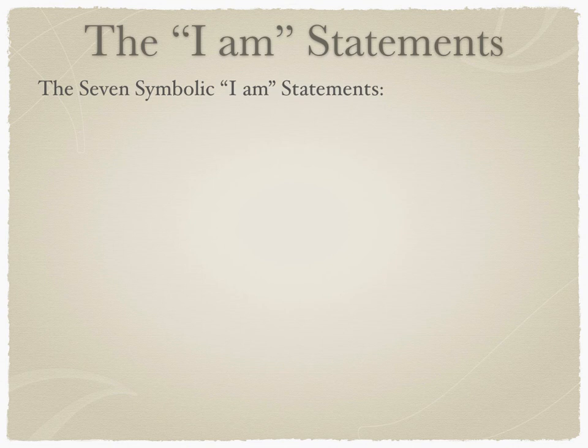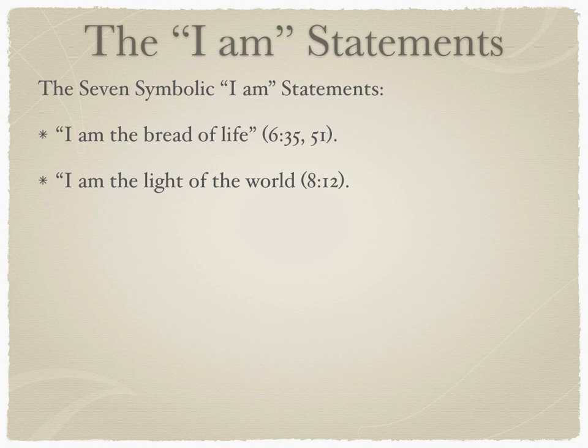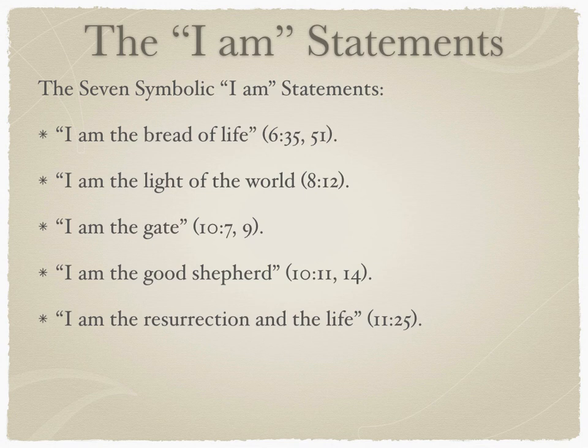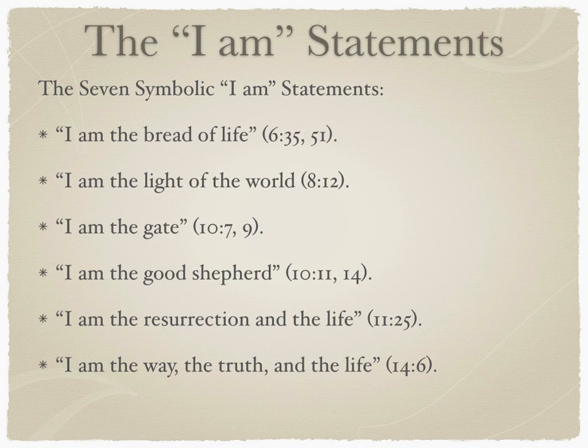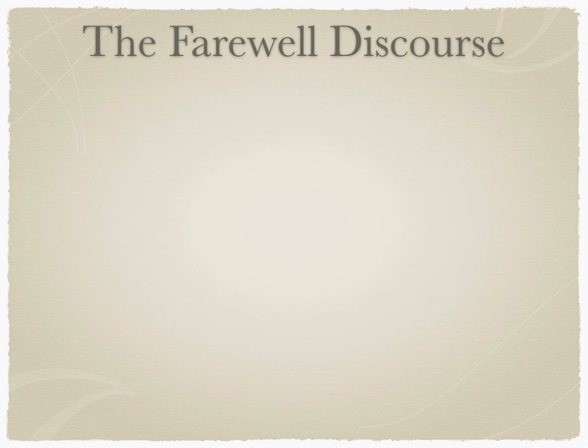The seven symbolic I Am statements come from here: I Am the bread of life. I Am the light of the world. I Am the gate — the gate through which the sheep enter. I Am the good shepherd. I Am the resurrection and the life. I Am the way, the truth, and the life — none of this is in Matthew, Mark, or Luke. And finally, I Am the true vine. Every one of these reveals something about himself, and almost all are couched in a very long speech.